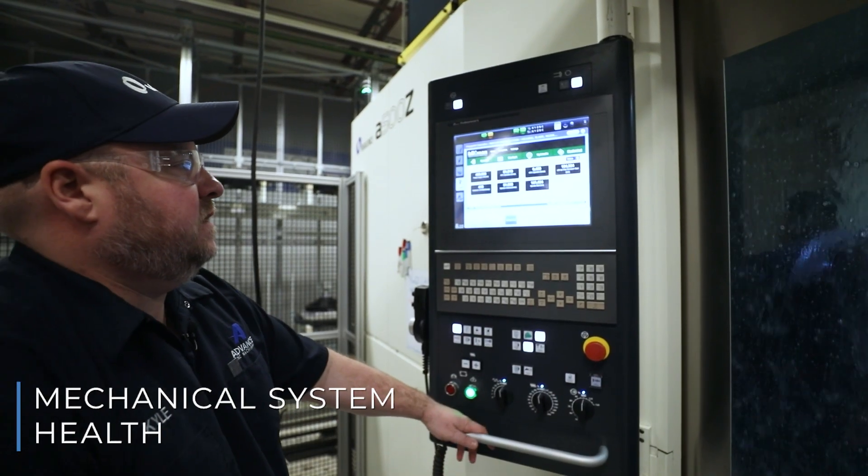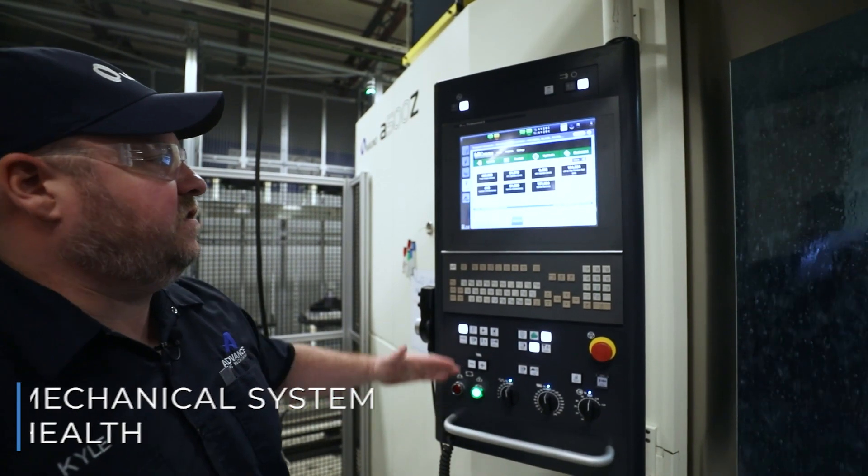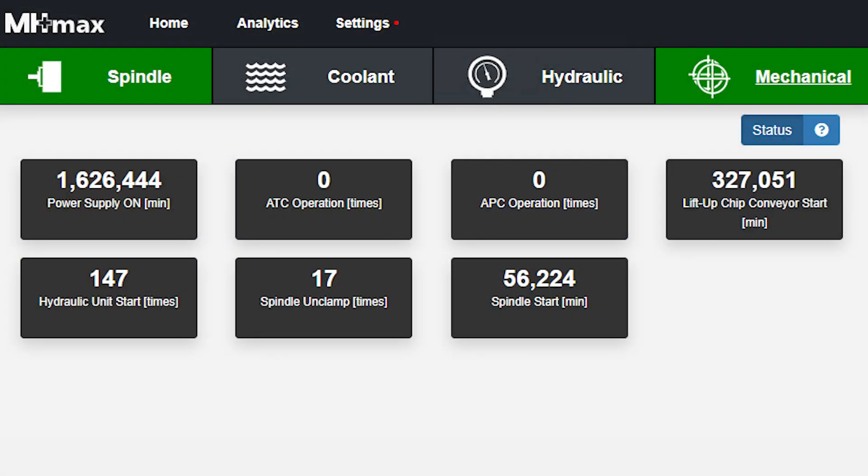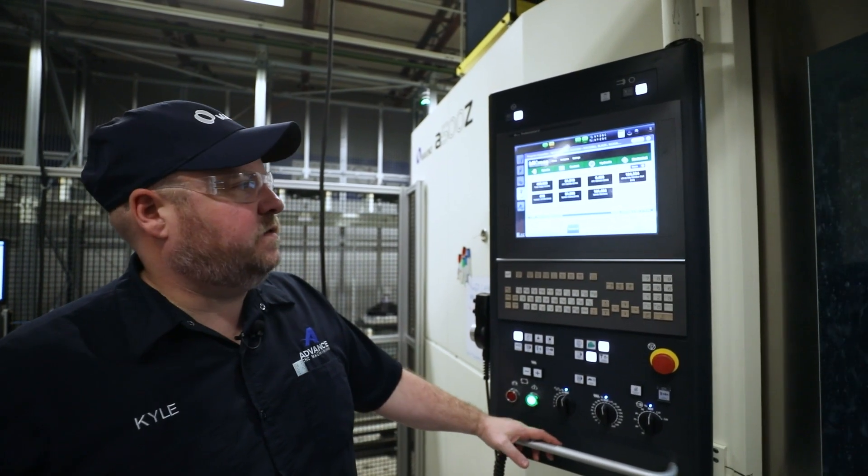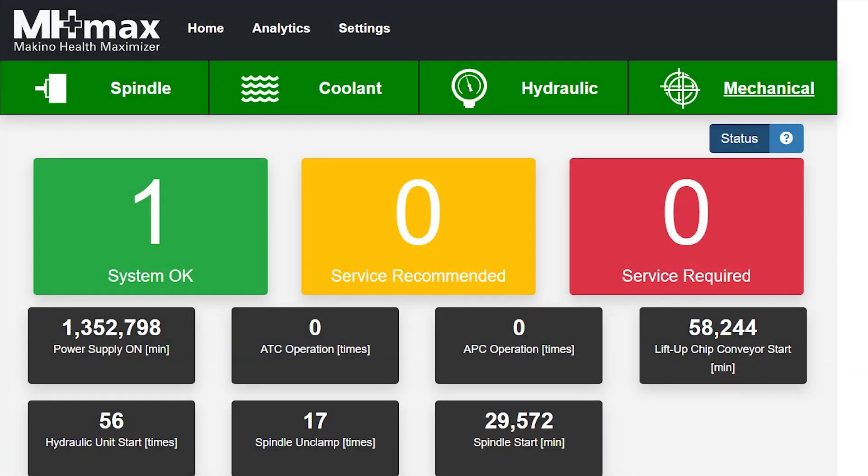From the mechanical side, this is basically just giving you all your information of power on time, everything. It gives you the status. It gives me an indicator when I have to schedule service with Makino to come in and service and do assist with our team and technical equipment's team to do preventative maintenance.